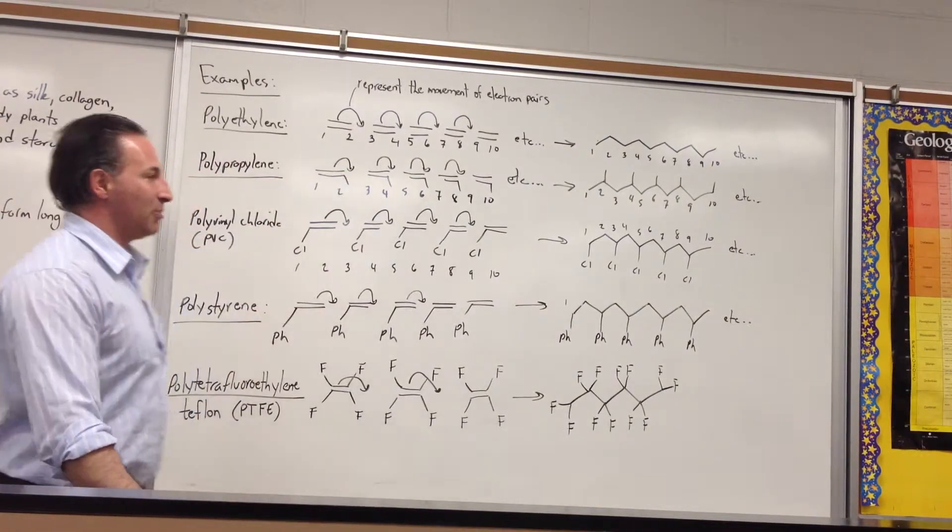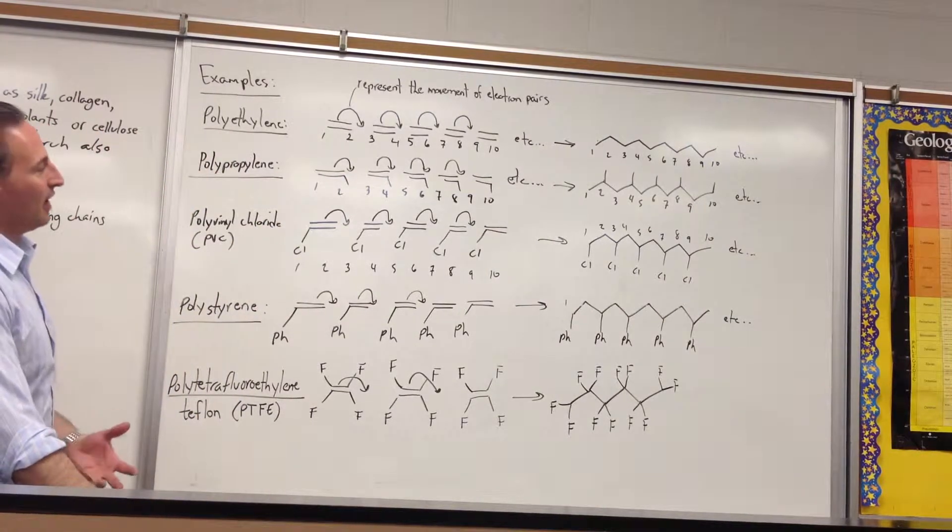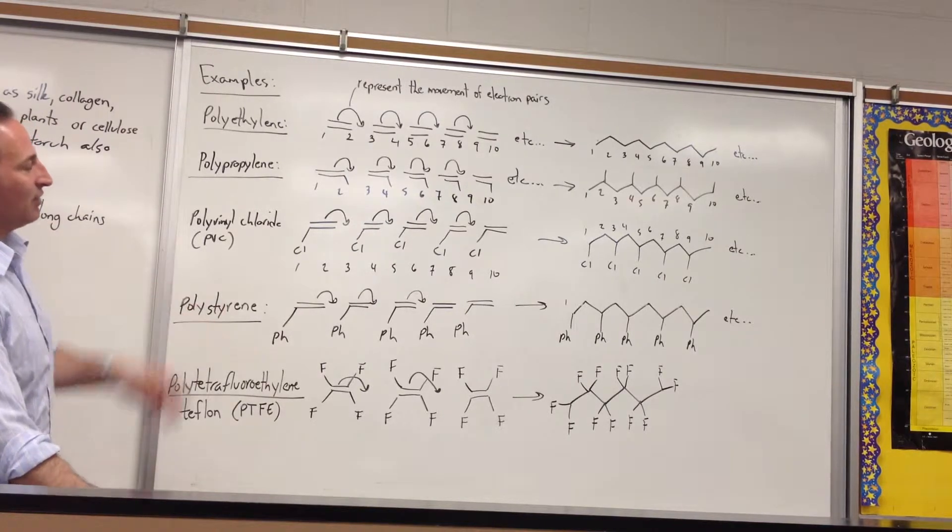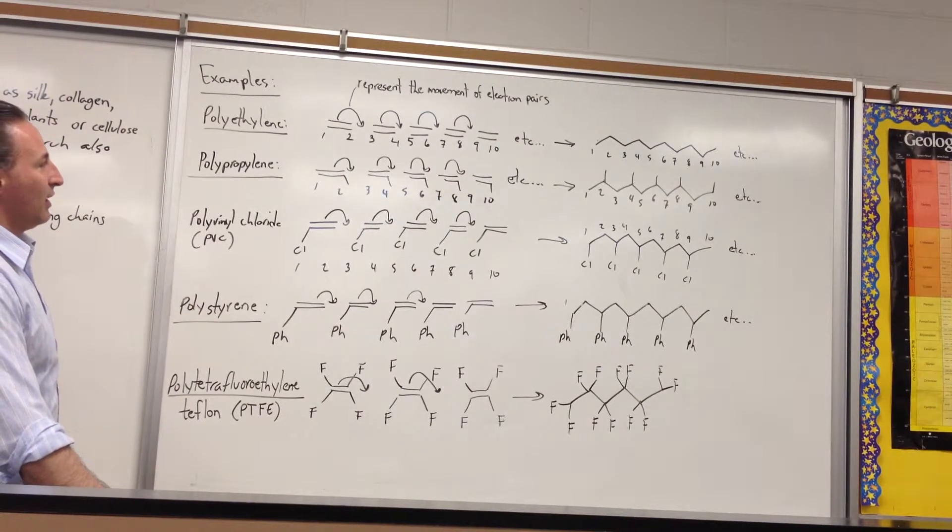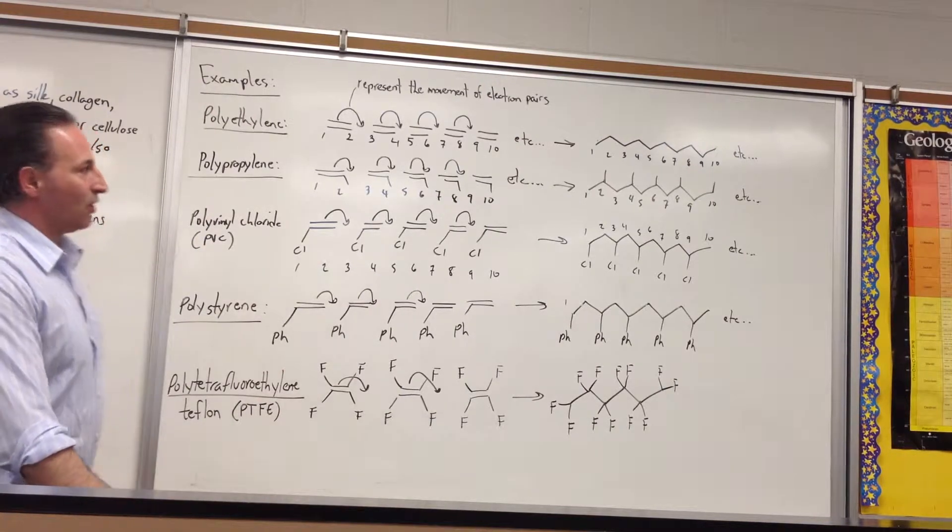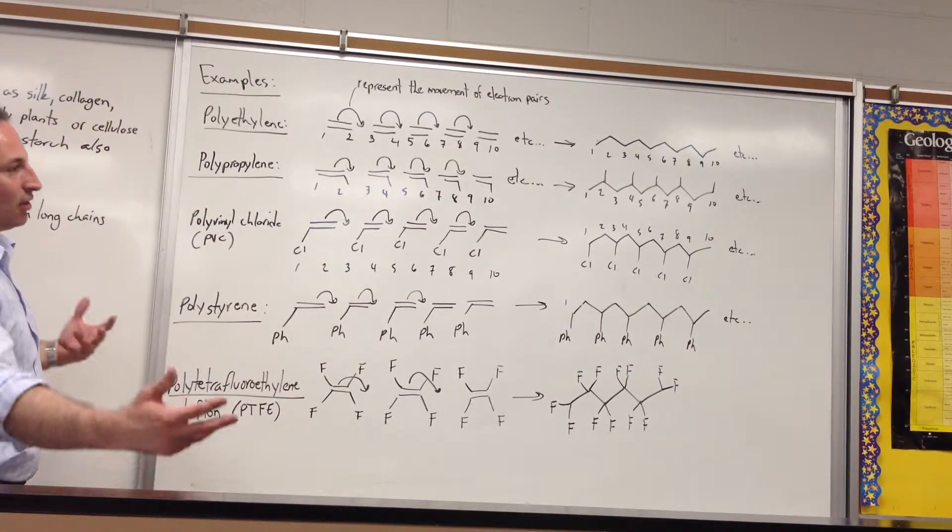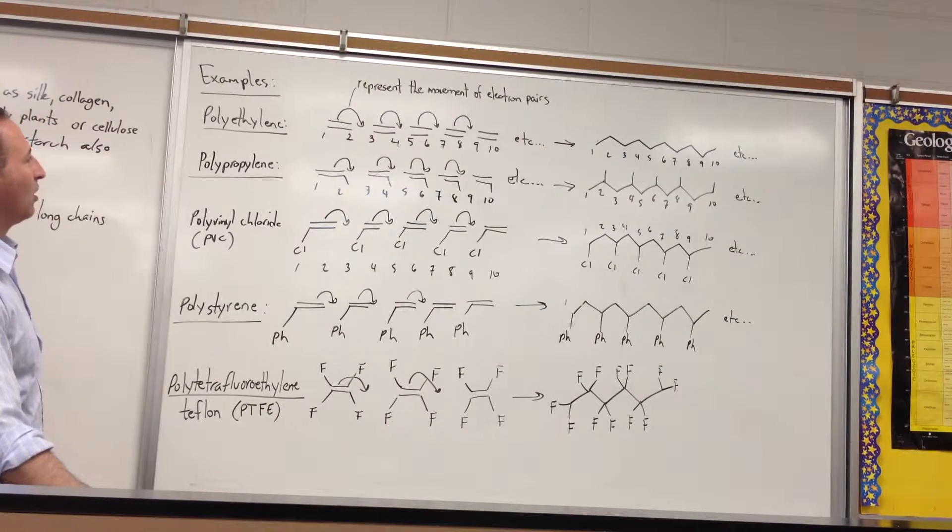Now, what I'm showing here is not exactly what happens, but in the net reaction, that's what happens. You have electrons now linking two carbon atoms. And if the reaction is repeated for a long chain, you get a long molecule we call polyethylene.